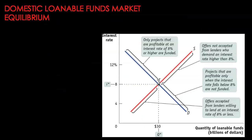Bringing the two together, the equilibrium interest rate is I*, where quantity supplied exactly equals quantity demanded. At this equilibrium rate of 8%, only projects profitable at 8% will be funded; projects for which 8% is insufficient will not be funded. Also, only lenders willing to lend at 8% will have their offers accepted — lenders demanding higher than 8% will not find borrowers. So this is not only an equilibrium outcome but also an efficient market outcome.